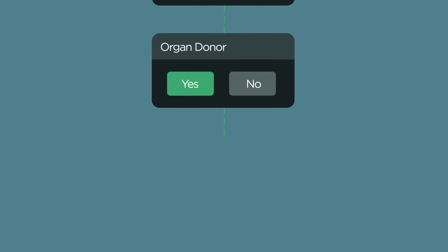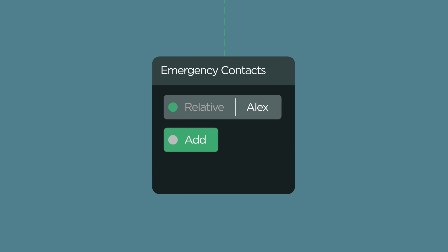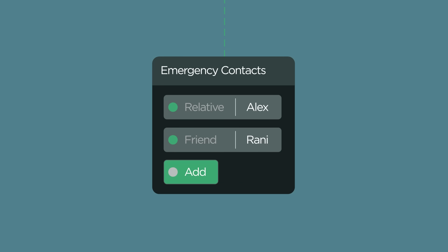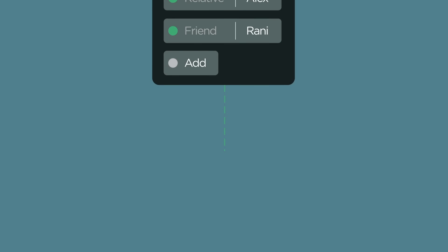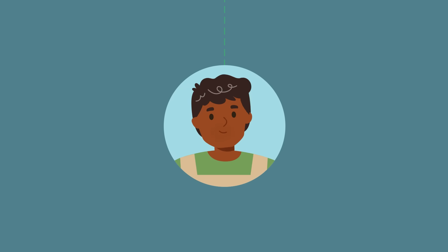Remember to add a couple of emergency contacts in here too. Try to add at least two or three so someone can always be reached. You can also add a picture of yourself, which will help identify that the phone belongs to you. Tap Done.